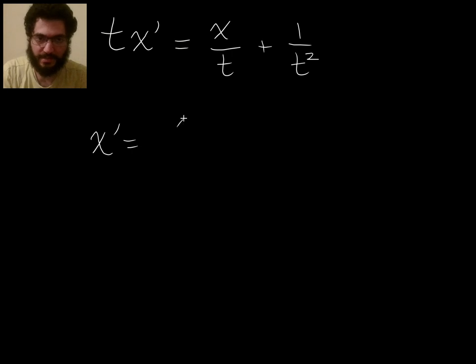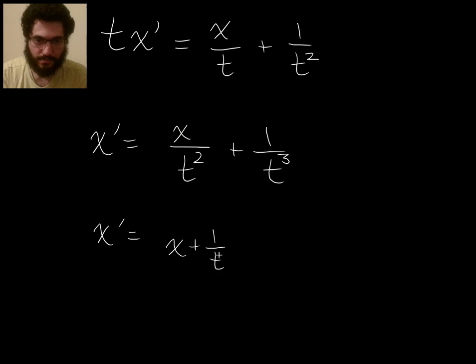Then I can divide both sides by t like I did last time. And I get this. And now it seems like there's no way I can write this as x stuff only times t stuff only. So I could try to pull out 1 over t squared like I did last time.